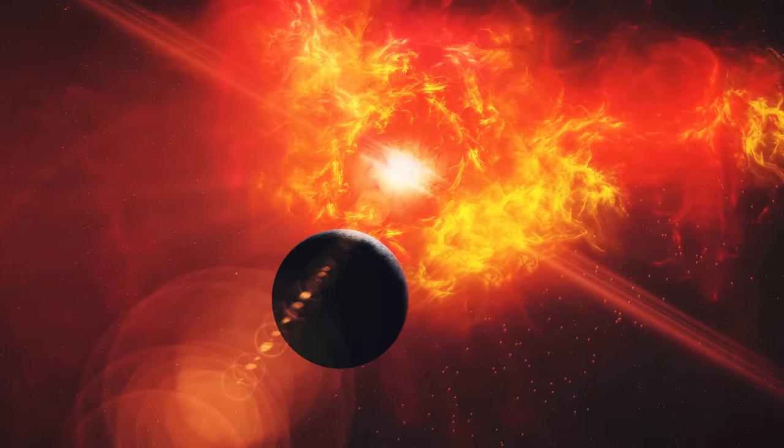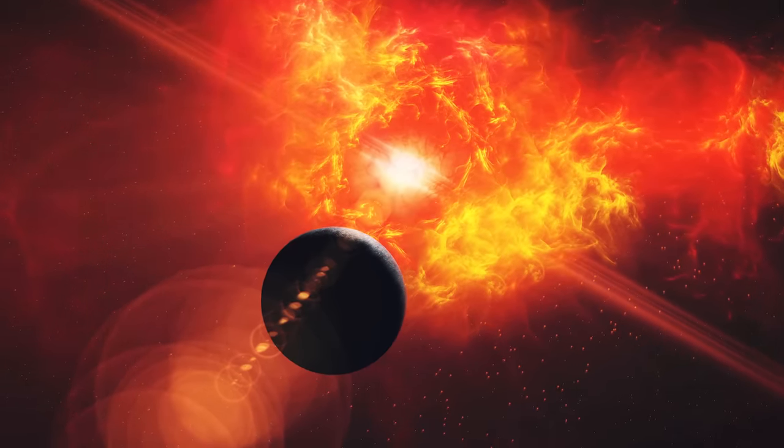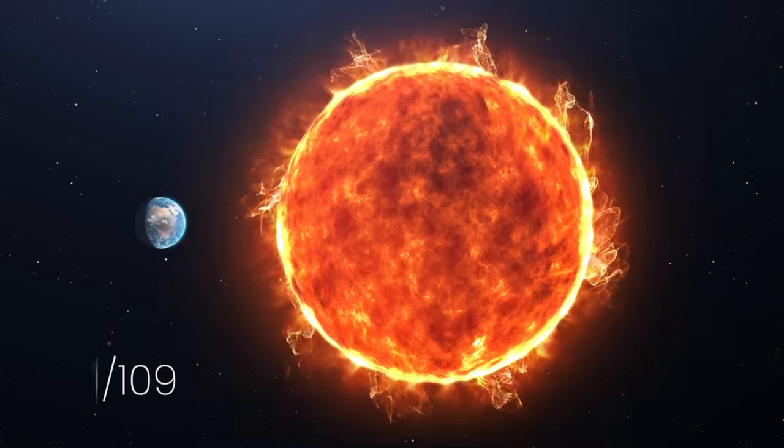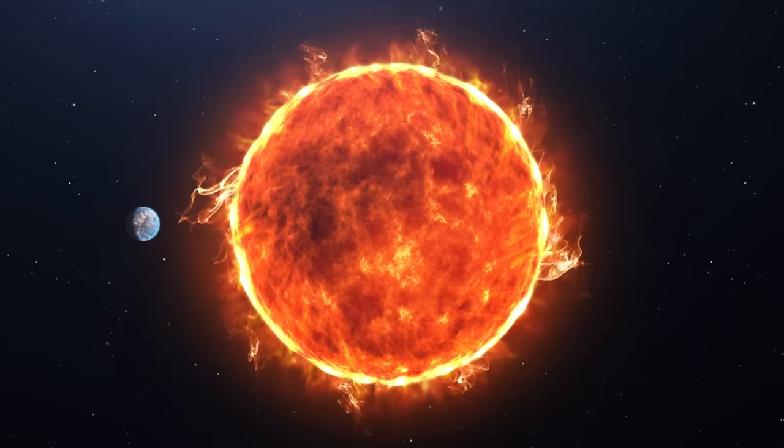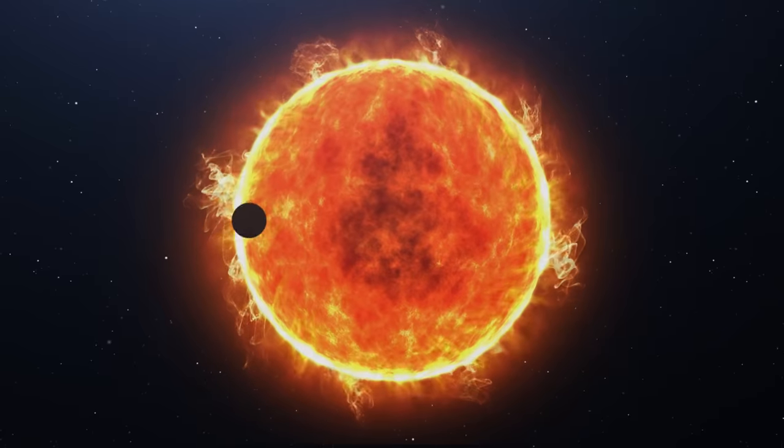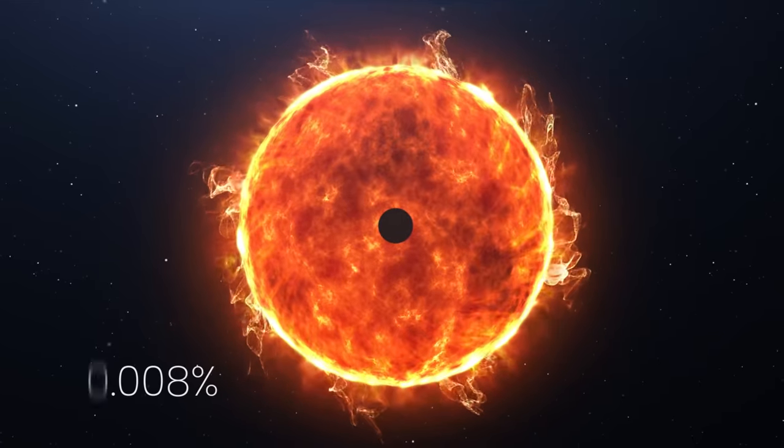However, detecting the transit of an extrasolar planet is very challenging. For example, the diameter of Earth is only one-109th of that of the Sun. So for an outside observer of the solar system, the passage of Earth would dim the output of the Sun by only 0.008%.